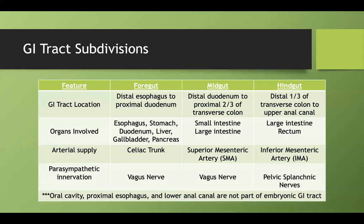Here's a chart outlining all the information we discussed so far. This section is somewhat rote memorization — I apologize for that — but I promise we have useful mnemonics and conceptual ideas coming forward. You need to know the arterial supply and innervation for each subsection of the GI tract, so this is important to look over.